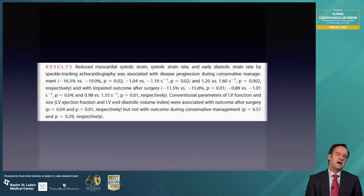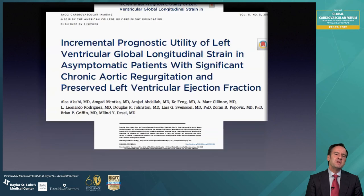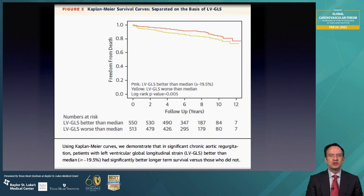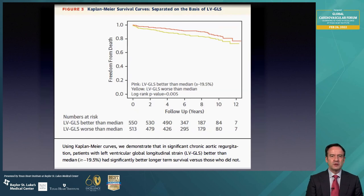There is data from the group at Cleveland Clinic showing that using a strain cutoff value of minus 19.5, you are able to prognosticate mortality in the patient with aortic insufficiency. So it's not just a biomarker we are following — global longitudinal strain is one that has an impact on mortality.